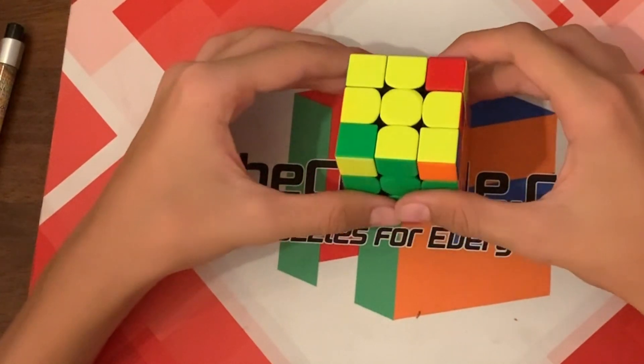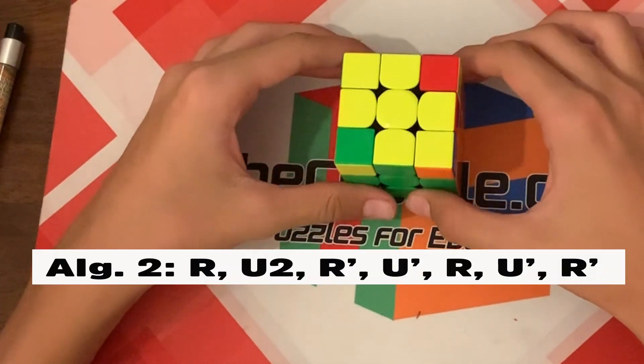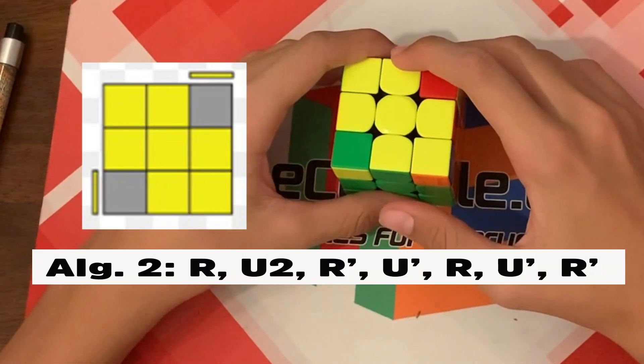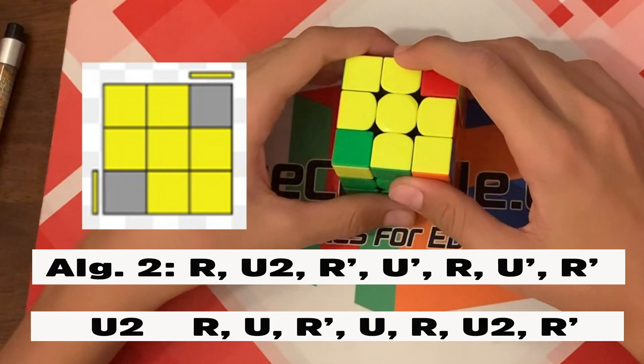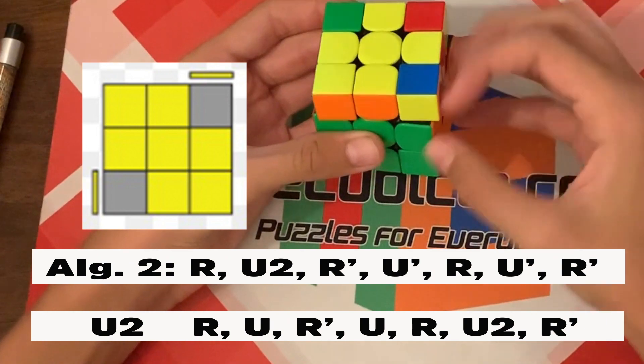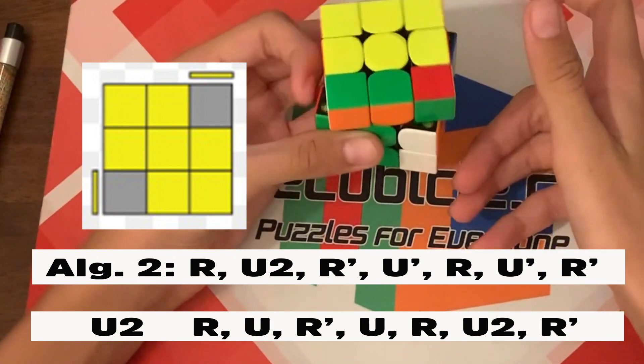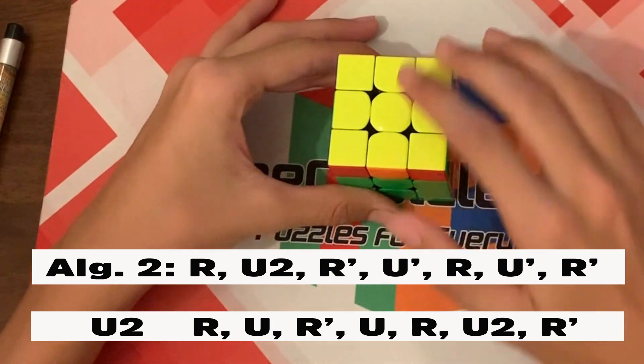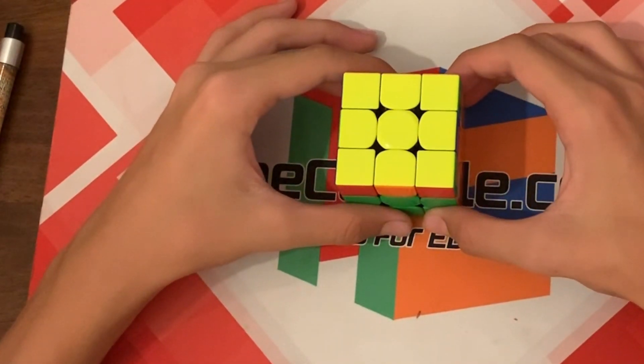And lastly, if your cube looks like this, do algorithm two U two one. And then you should have all of the yellow on the top of your cube.